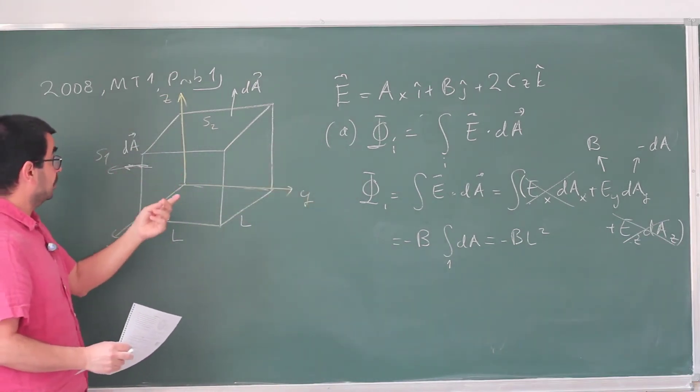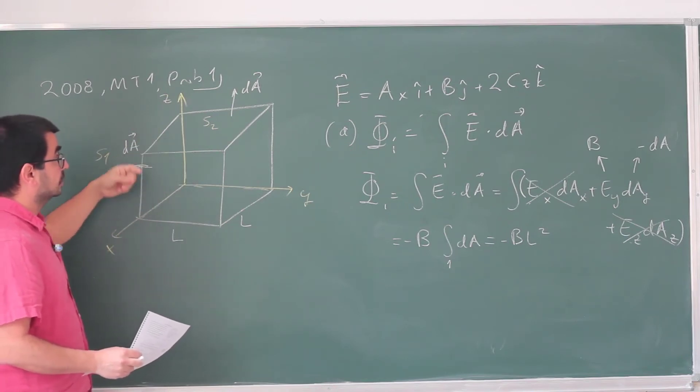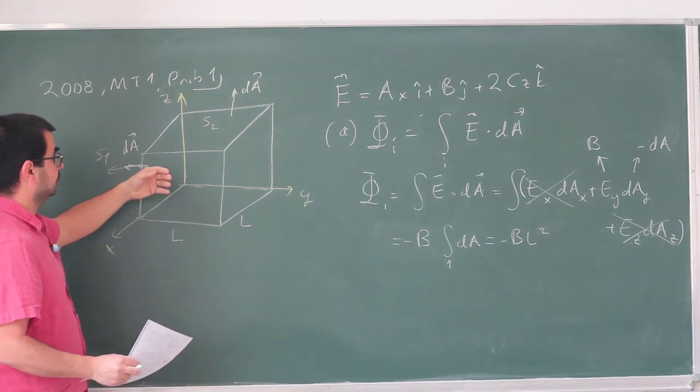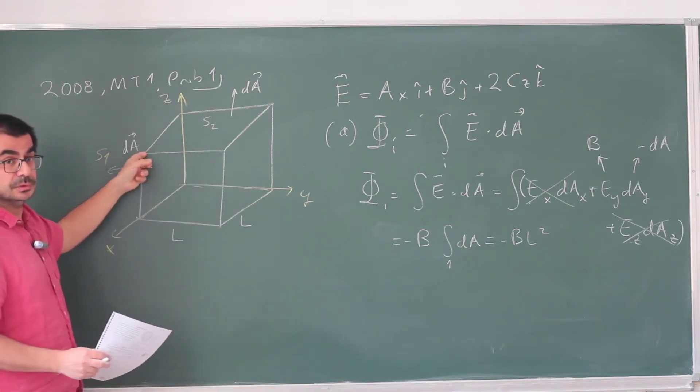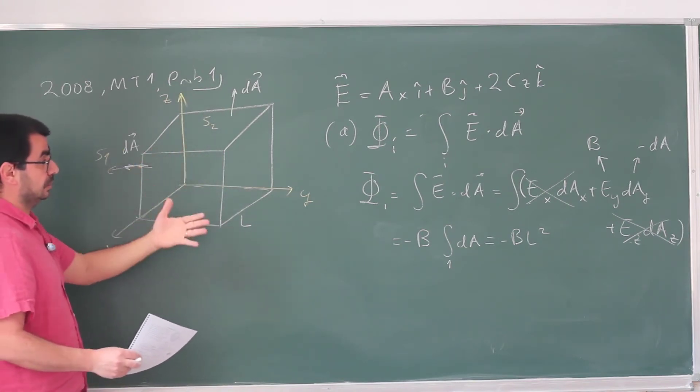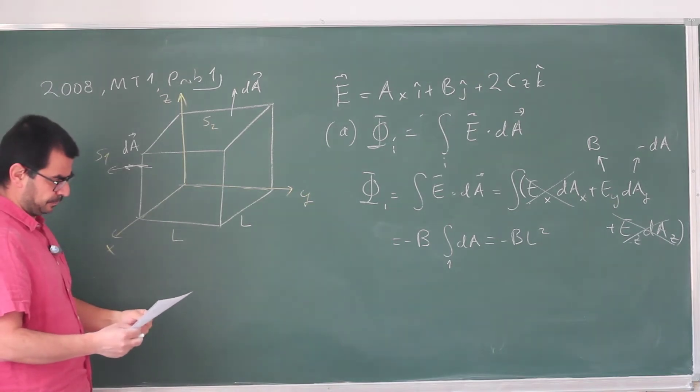Wait, let me recalculate. On face one, dA is in the negative x direction, but we're integrating over the face where the y component matters. This becomes -b integral dA, which is -bL squared. So if b is a positive number, the electric field over this surface is in the positive direction, opposite to the direction of the surface element. So the dot product yields a negative number. It checks out fine.